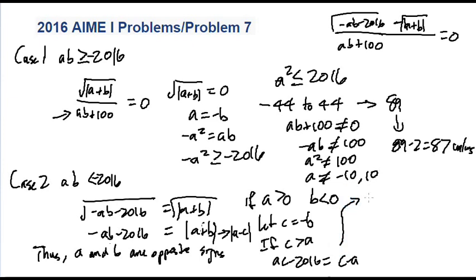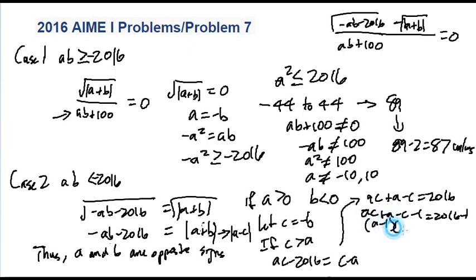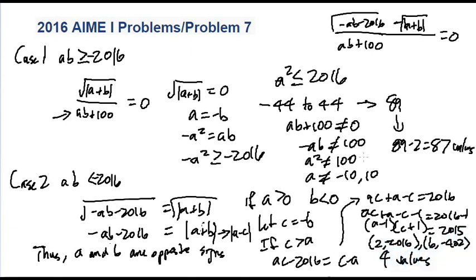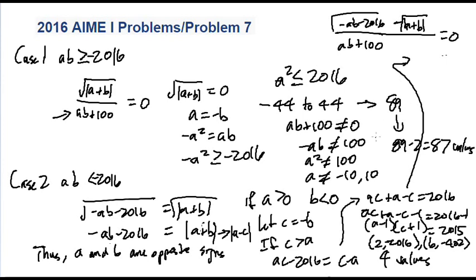So then we get an equation like this, and then we solve it. This equation becomes ac plus a minus c equals 2016. Subtract 1 from both sides times 2016 minus 1, and you factor it to get (a minus 1)(c plus 1) equals 2015. And from this you get four possible answers for a and c — the answers are like 2 and negative 2016, and 6 and negative 402. I'm not entirely sure about these specific values, but there you have four valid values. And none of these four values have ab equal to negative 100, so you don't have to worry about the denominator in this case.